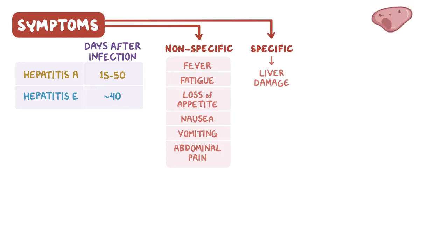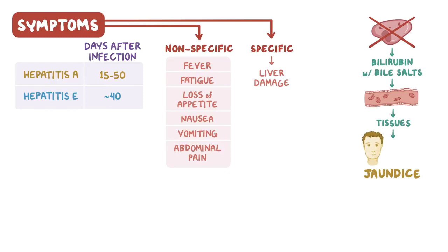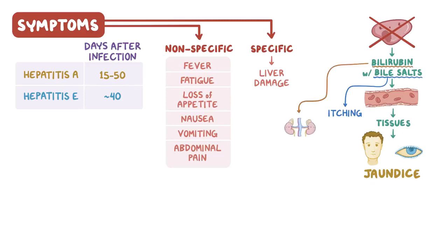Specific symptoms are related to liver damage. When hepatocytes are destroyed, bilirubin with bile salts are released into the bloodstream and impregnate the tissues causing jaundice, which is a yellowish pigmentation of the skin, mucosa, and whites of the eyes, while the bile salts in the skin cause itching. The bilirubin from the blood is filtered by the kidneys and ends up in the urine instead of the stool, making it dark while the stool becomes pale.